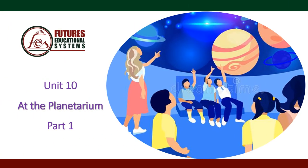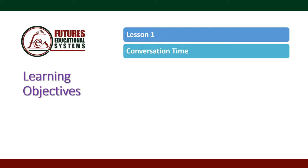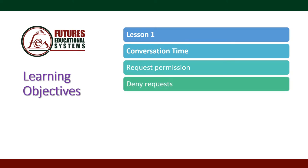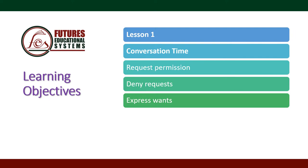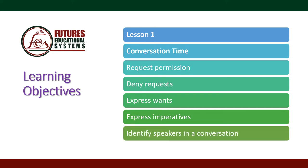Hello, my dear students. Hello, Grade 5! Today we are going to study Unit 10, Part 1. The title is 'At the Planetarium.' In this part, we are going to know the learning objectives. In Lesson 1, we will start with conversation time, then learn how to request permission, deny requests, suppress wants, suppress imperatives, and identify speakers in a conversation.